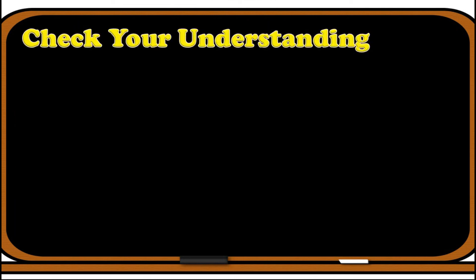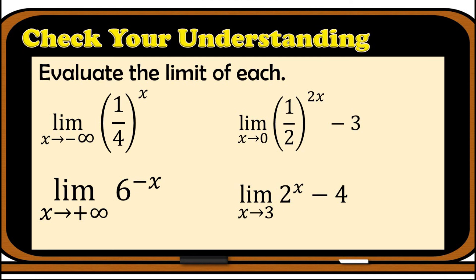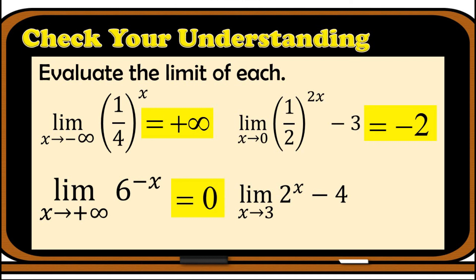At this point, kindly check your own understanding based on our discussion. You may pause the video to answer the following items. The limit of (1/4)^x as x approaches negative infinity is positive infinity. The limit of 6^(−x) as x approaches positive infinity is 0. The limit of (1/2)^(2x−3) as x approaches 0 is −2. And the limit of 2^(x−4) as x approaches 3 is 4.